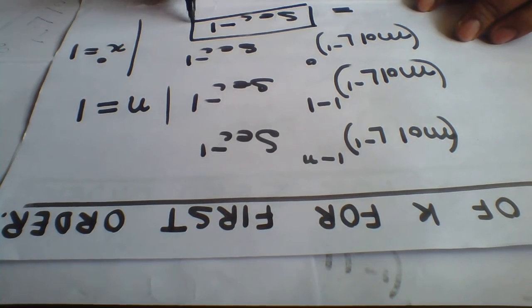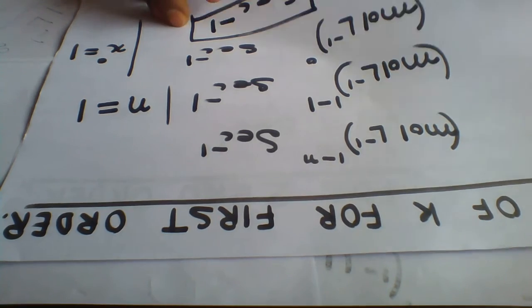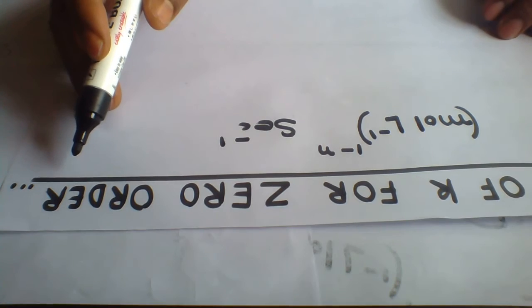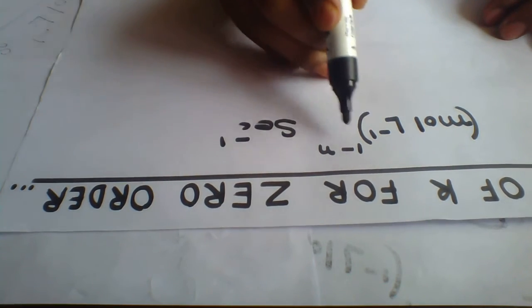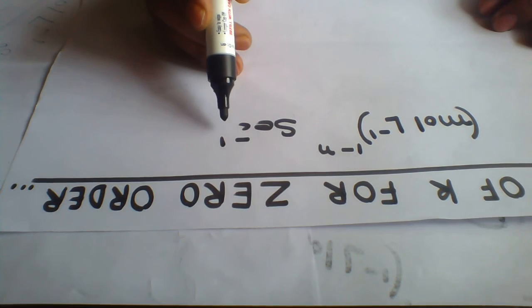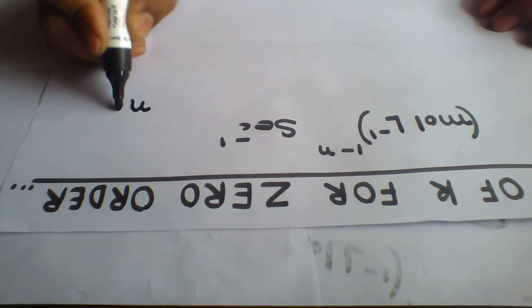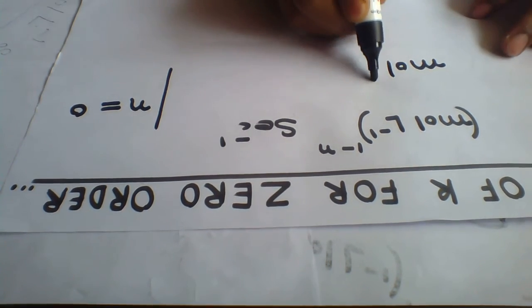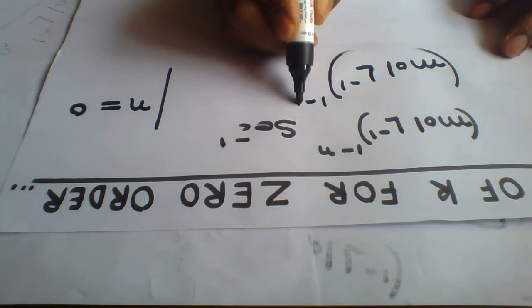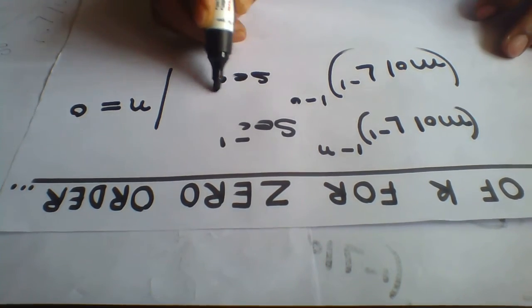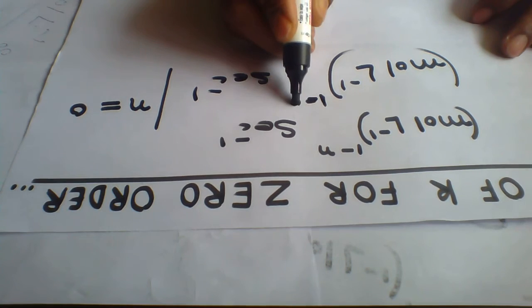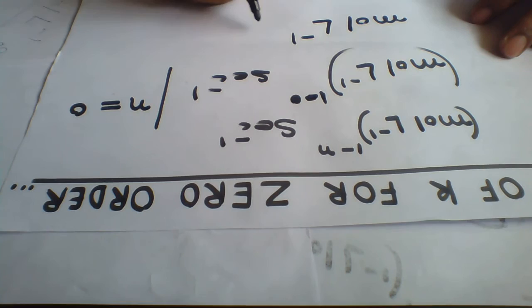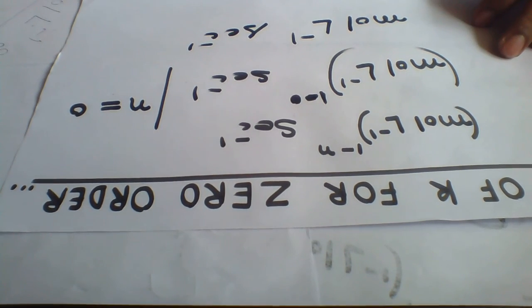So moles per liter 1 minus 0, second inverse. 1 minus 0 is simply 1, so everything remains the same: moles per liter per second. Thank you.